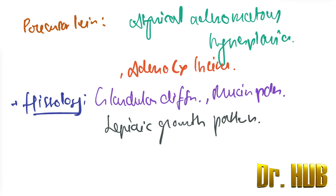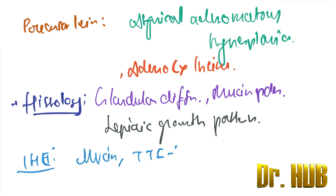Next, let's look at the IHC — immunohistochemistry. Under this it includes mucin, TTF1, as well as Napsin A.